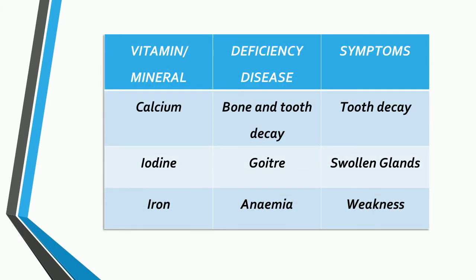Deficiency of calcium leads to bone and tooth decay. Its symptoms are tooth decay. Goiter is caused when there is a lack of iodine; its symptom is swollen glands. Deficiency of iron leads to anemia in the body, with symptoms of weakness.